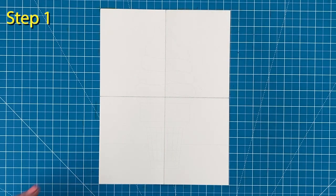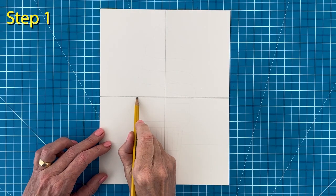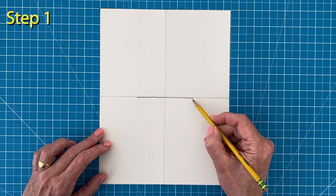Step number one. Draw a skinny rectangle for the edge of the cone on that center fold line.